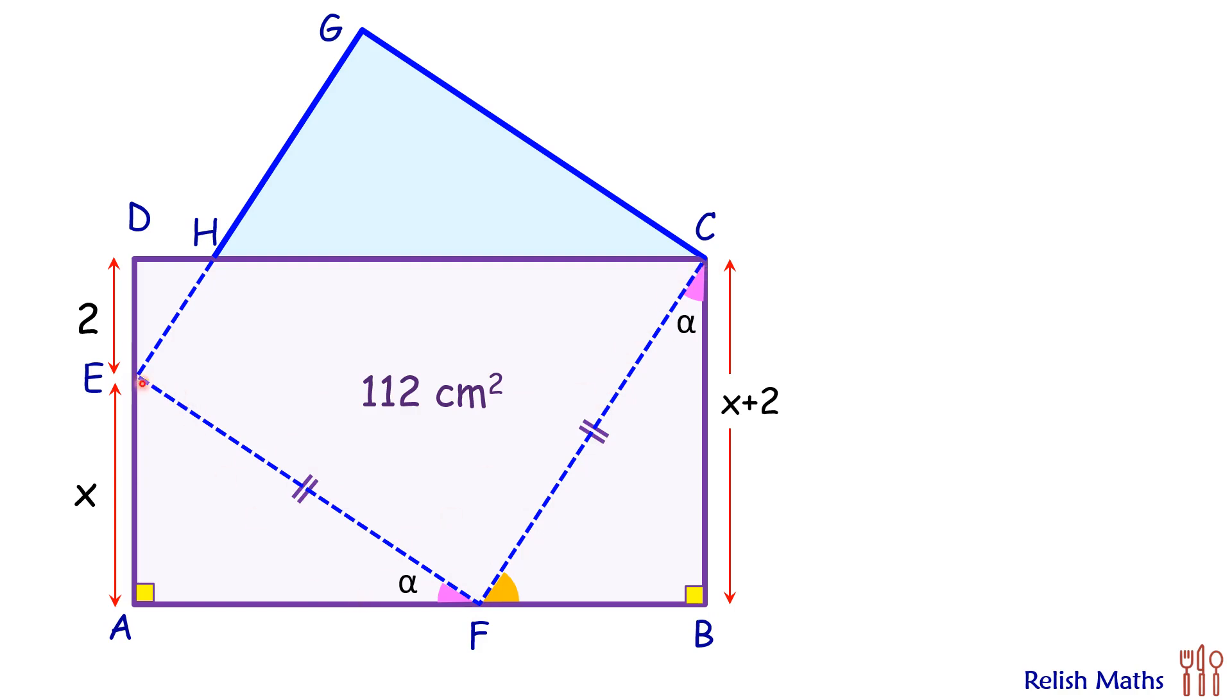In triangle EAF, that is this yellow triangle, that will be congruent to triangle FBC by angle-angle-side. As the triangles are congruent, thus the corresponding sides will be equal.